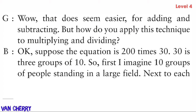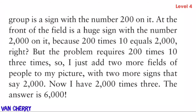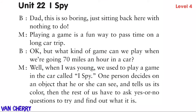Okay — suppose the equation is 200 times 30. Thirty is three groups of ten, so first I imagine 10 groups of people standing in a large field; next to each group is a sign with the number 200 on it. At the front of the field is a huge sign with the number 2,000 — because 200 times 10 equals 2,000. But the problem requires 200 times 10 three times, so I just add two more fields of people with two more signs that say 2,000. Now I have 2,000 times three — the answer is 6,000.